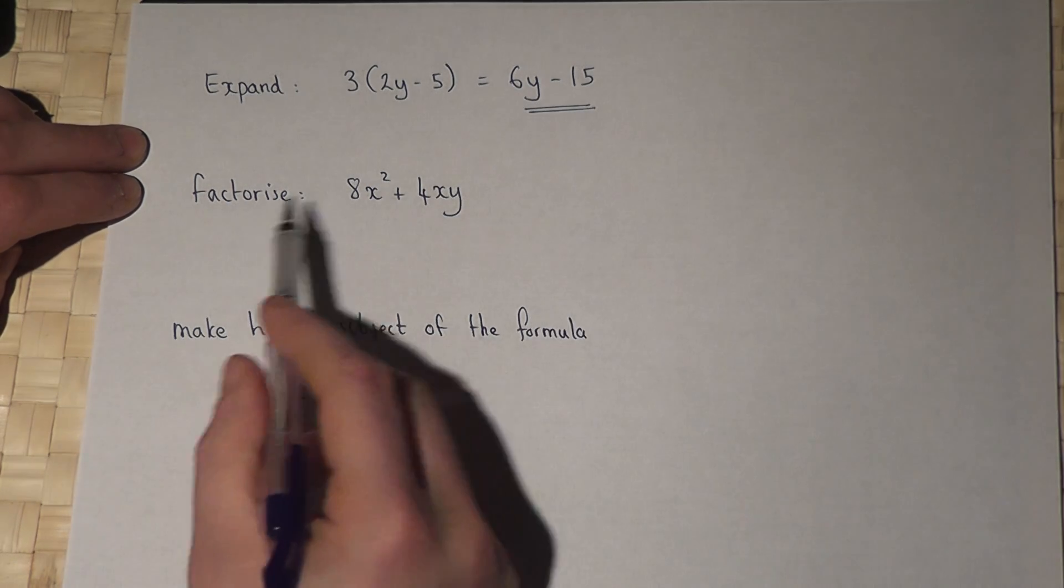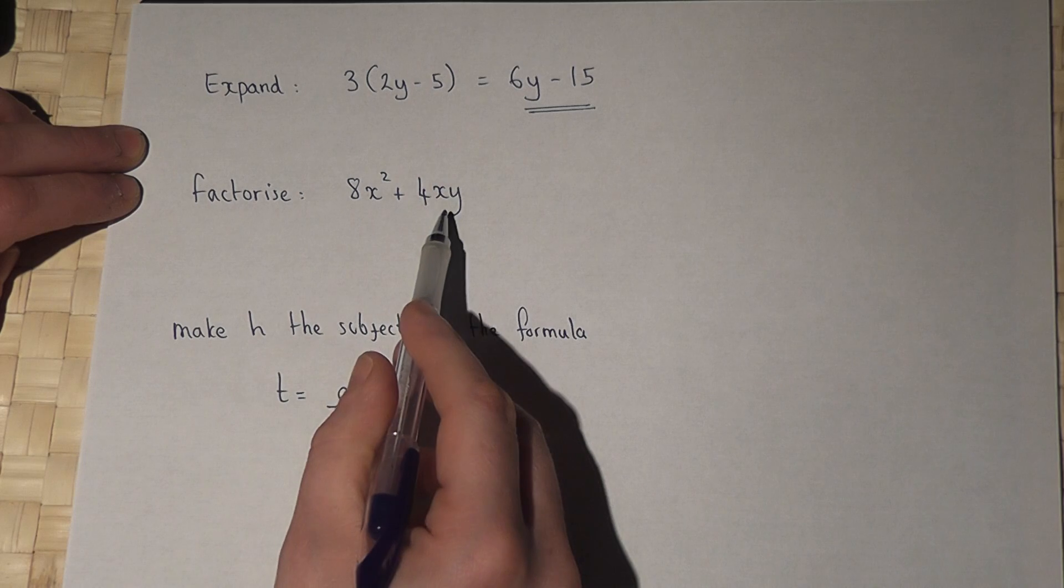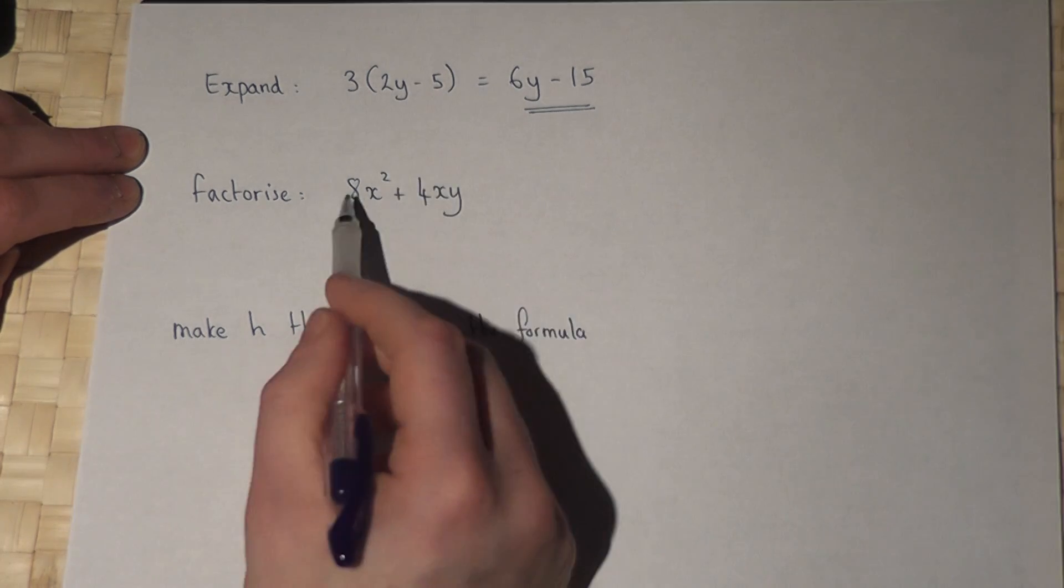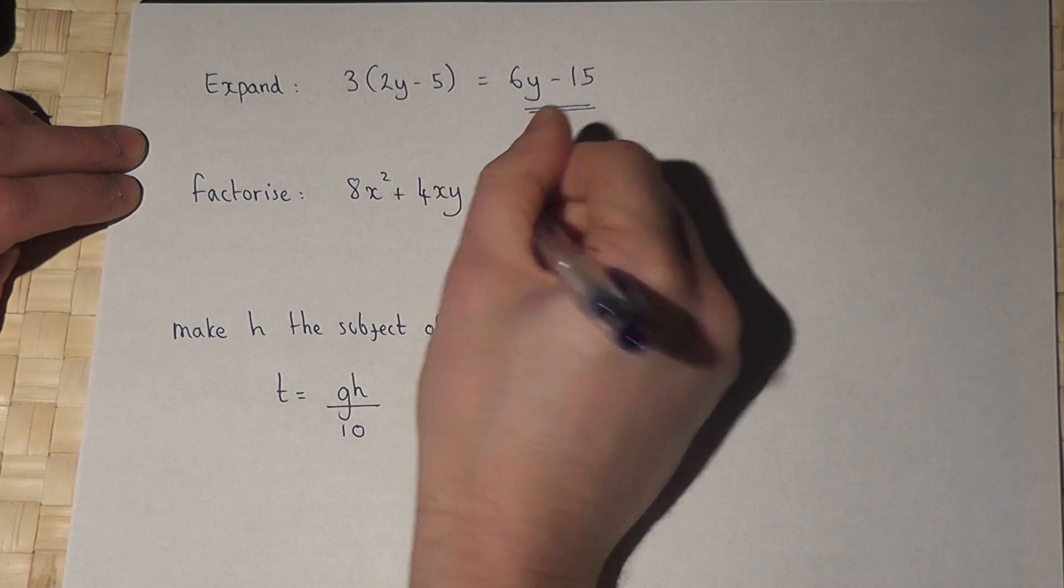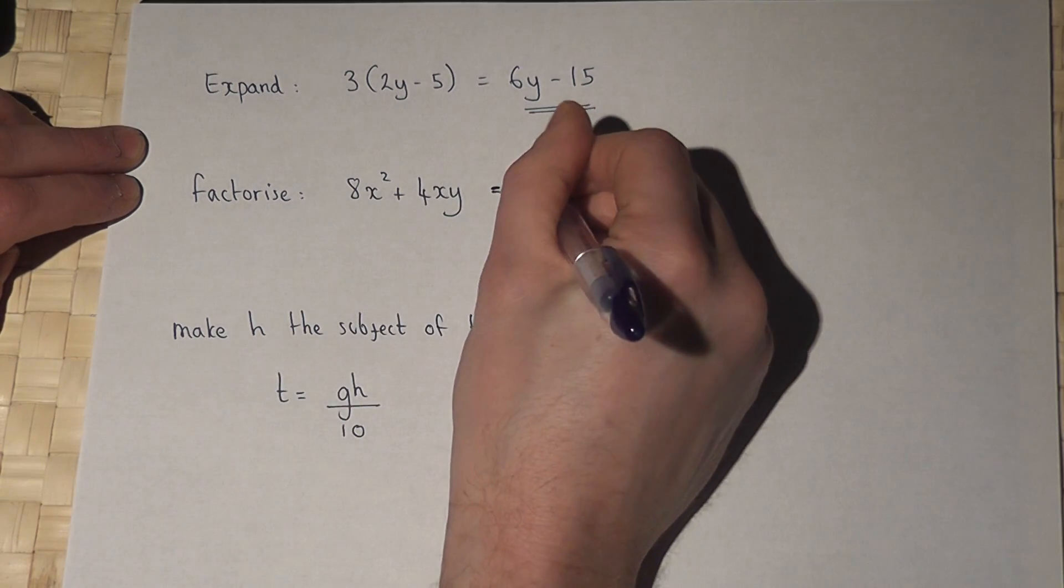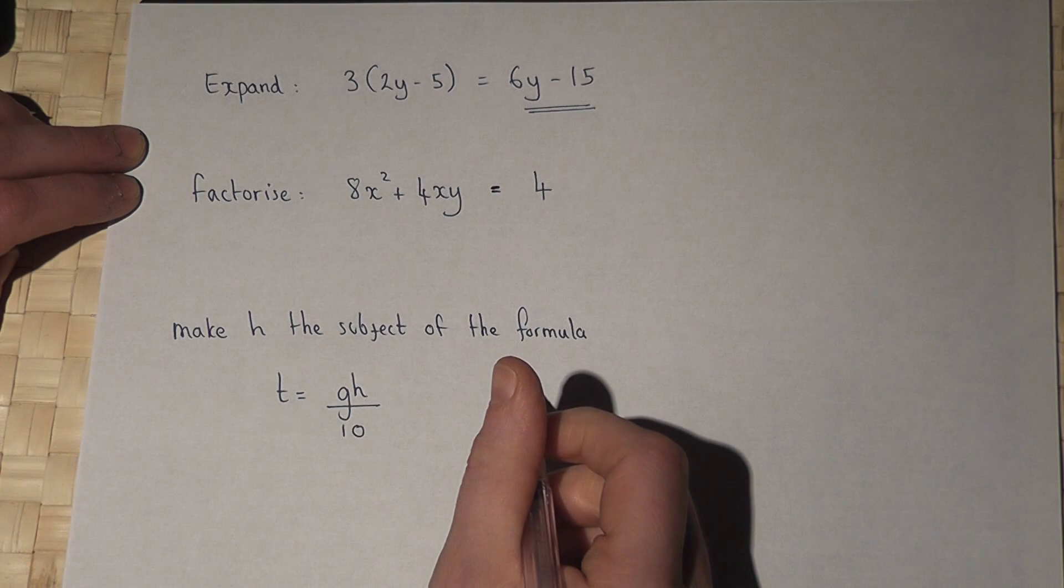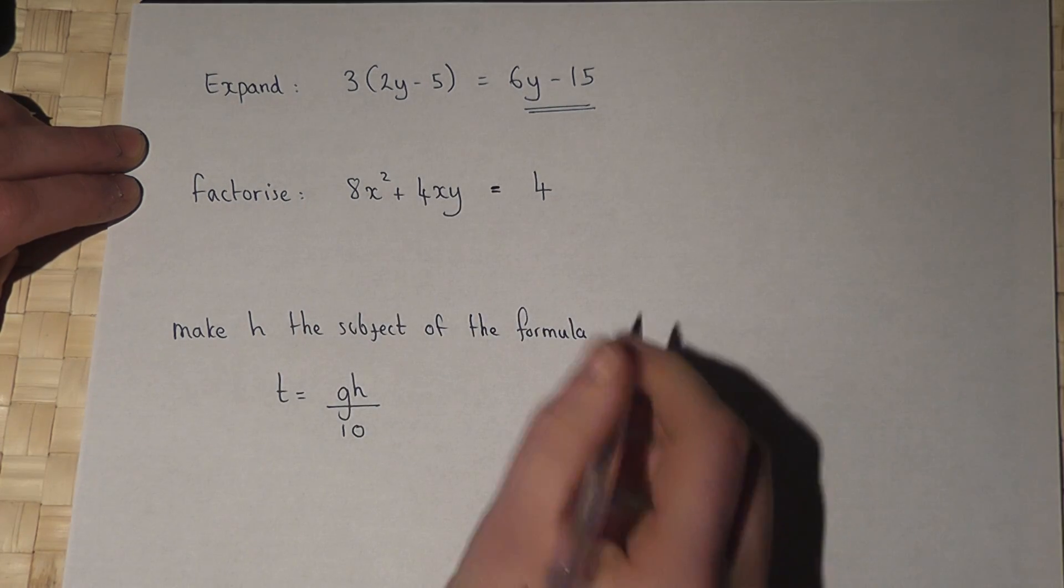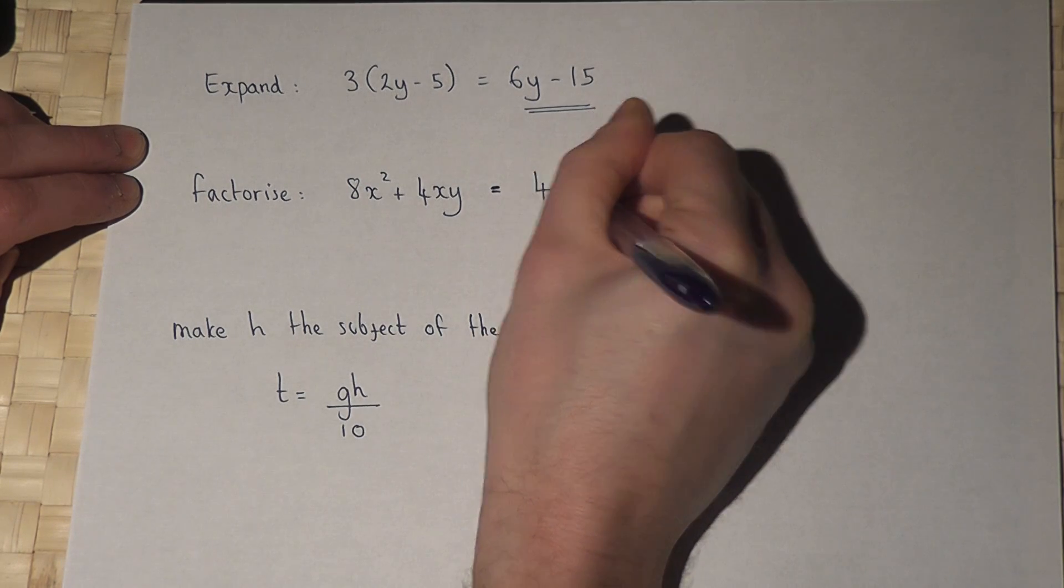Now if we're asked to factorise, this means to go back into the bracket form. If we look at 8 and 4, we know that 4 is a factor of 4 and 8. I can also see an x in both parts of the question, so I can put 4x.